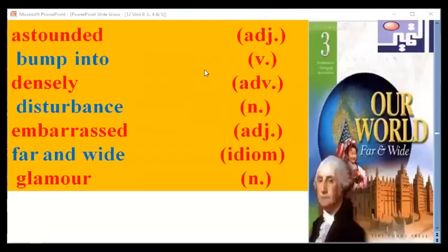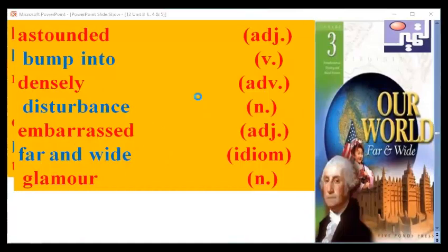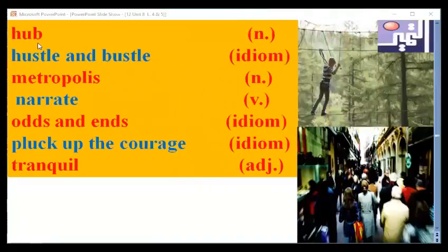Now let's revise this new vocabulary again. We have: astounded, bump into, densely, disturbance, embarrassed, far and wide, glamour, hub, hustle and bustle, metropolis, narrate, odds and ends, pluck up the courage, and tranquil. Take care of the part of speech for each word.